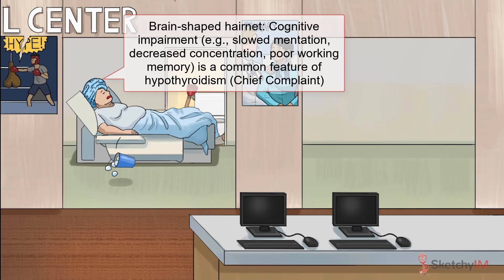Cognitive impairment in hypothyroidism typically manifests as slow mentation, decreased concentration, or poor working memory, and can be more apparent in elderly patients. Therefore, when an elderly patient presents with cognitive impairment, make sure to rule out hypothyroidism before you call it dementia. Remember, unlike dementia, cognitive impairment rarely occurs in isolation in patients with hypothyroidism.